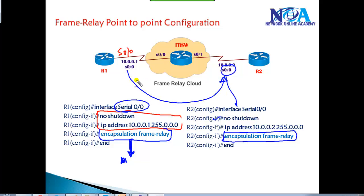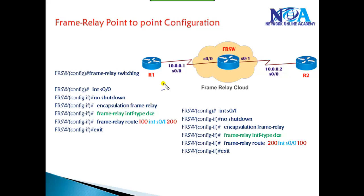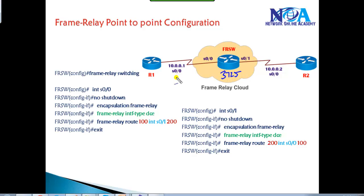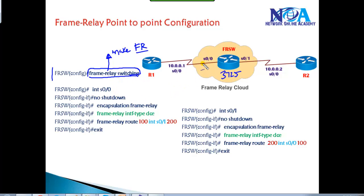Once we do this on Router 1 and Router 2, communication won't happen yet because we still need to configure the middle router as a frame relay switch. The service provider uses a normal router — in this case a 3725 series router. The first command we use is 'frame-relay switching' in global configuration mode. This makes the router act as a frame relay switch, forwarding packets based on DLCI values rather than IP. Then go to interface S0/0, give no shutdown, and set encapsulation frame relay.